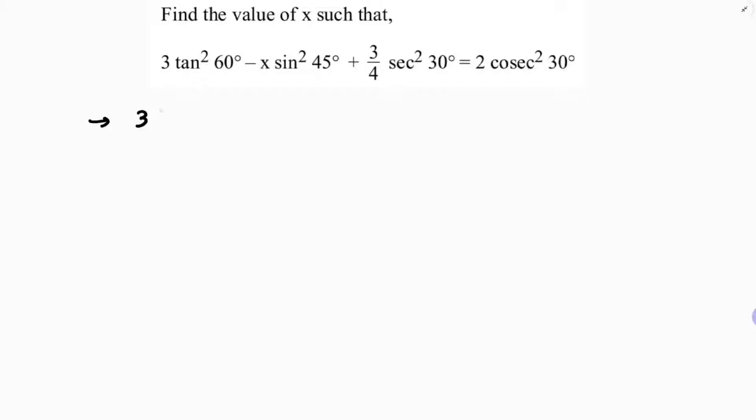So tan 60° value is √3. 3(√3)² minus x sin 45°. Sin 45° is 1/√2, so that's (1/√2)² plus 3/4.